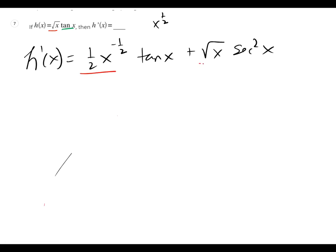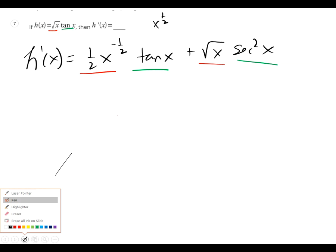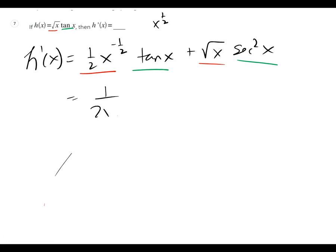Red derivative, red original. You may get out the colored pencils even if I forget to tell you. Green original, green derivative. If it was multiple choice, there's a chance it's one over two times the square root of x, or it might say tangent of x plus the derivative of that. It might look like that if it was multiple choice.